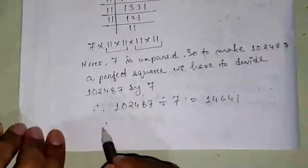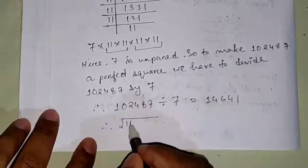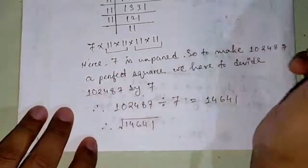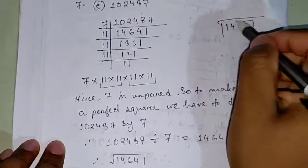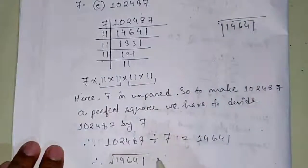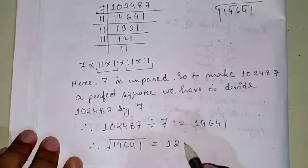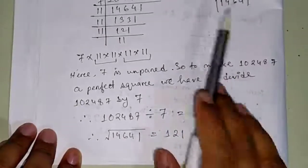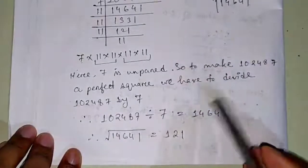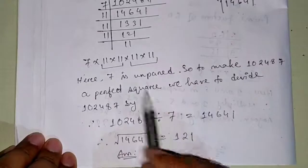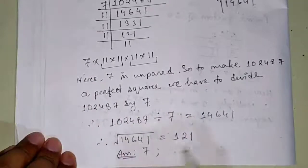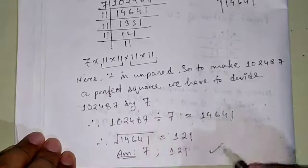The question also asks to find the square root of the number so obtained. So if we divide 102487 by 7 we get 14641. Therefore, square root of 14641 — you can find it using the division method — is 121. Therefore our answer is: the smallest number is 7, and the square root of 14641 is 121.